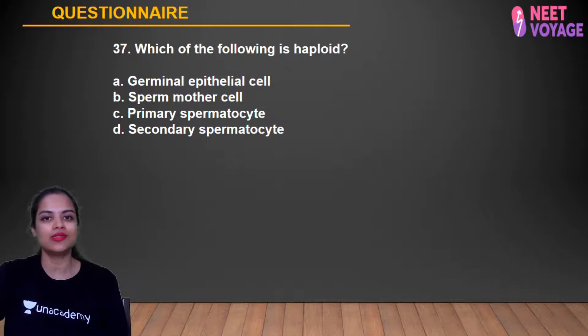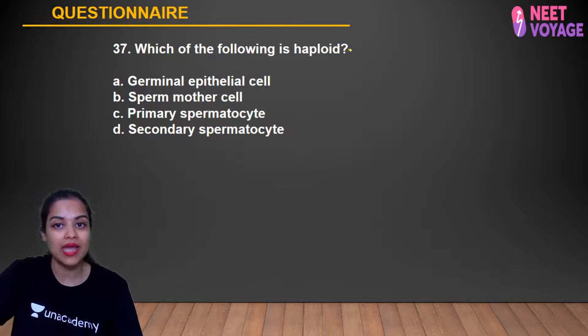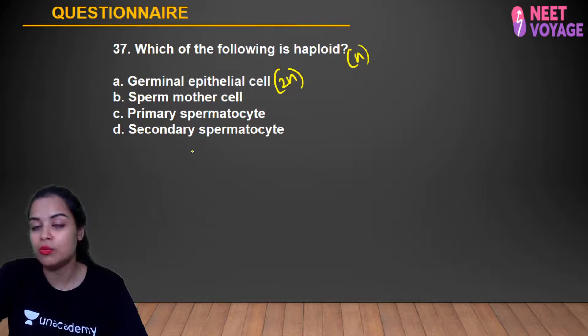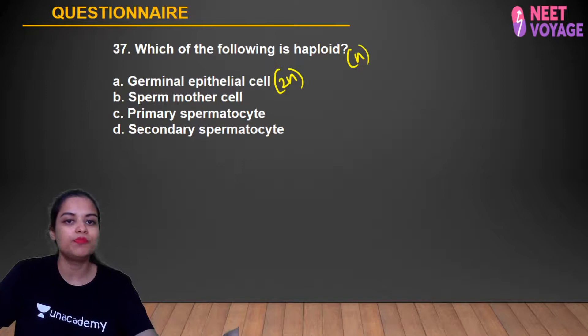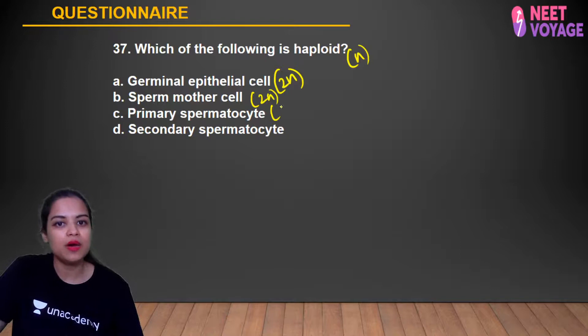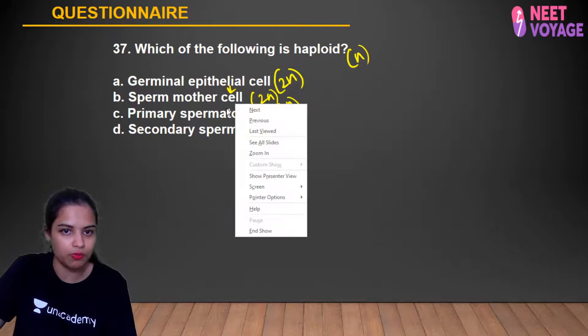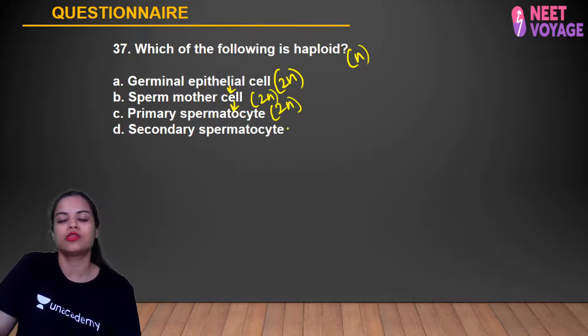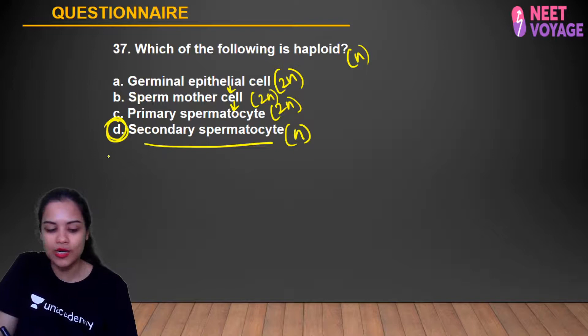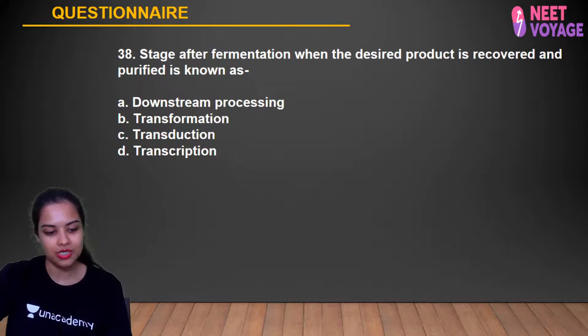Question 37: Which of the following is haploid? Germinal epithelial cells are diploid (2N). Sperm mother cell (spermatogonia) is 2N. Primary spermatocyte is 2N (formed by mitosis from spermatogonia). Secondary spermatocyte is haploid (N) — formed after meiosis I of the primary spermatocyte. So D (secondary spermatocyte) is haploid. Ritik, Sabah, Samreen, Kamal, Simran, Shashank, Anshika, Alok, Tanusha, and Anusha gave the correct answer.